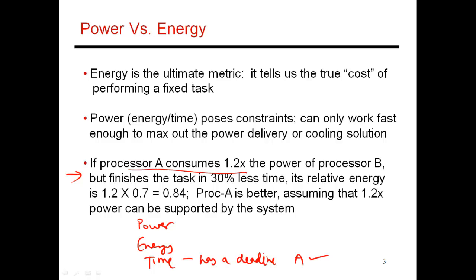The second constraint is power consumption. Say I have a given cooling solution — a fan next to the processor — that is adequate for processor B. But A consumes 1.2x more power, and that same cooling solution doesn't work well for A; I might need liquid cooling, which dramatically increases cooling costs. If I'm constrained by cooling costs, I should go with processor B. If my simple cooling solution only works for B and not A, then B is the clear winner.